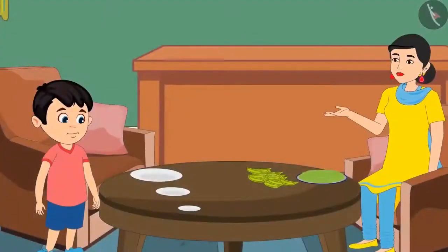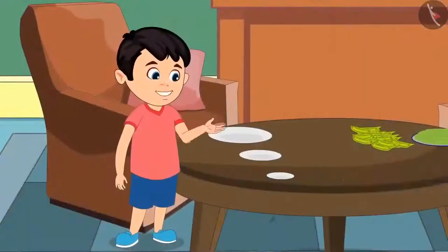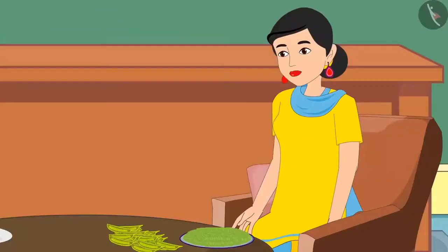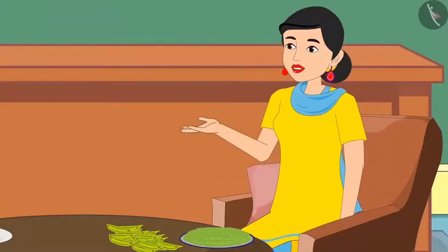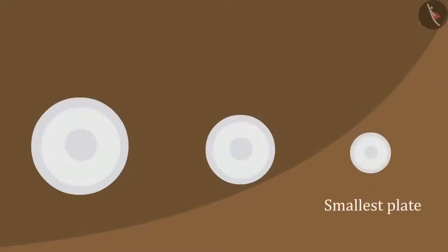Chotu, you are right — both these plates are smaller than this plate. Can you tell me which is the smallest among them? Yes Mom, this plate is the smallest. Yes Chotu, you are absolutely right. Now put the other two plates back please. Children, did you see? This is the smallest plate among these three plates, and this is the largest plate.